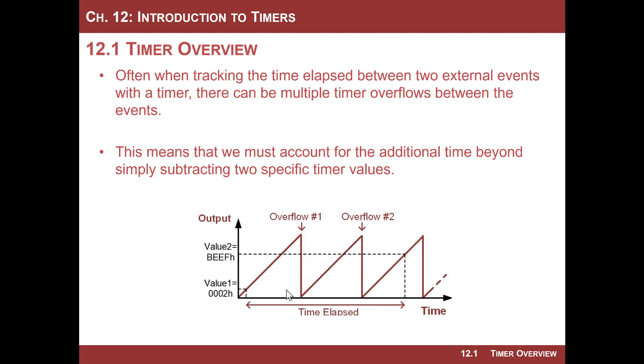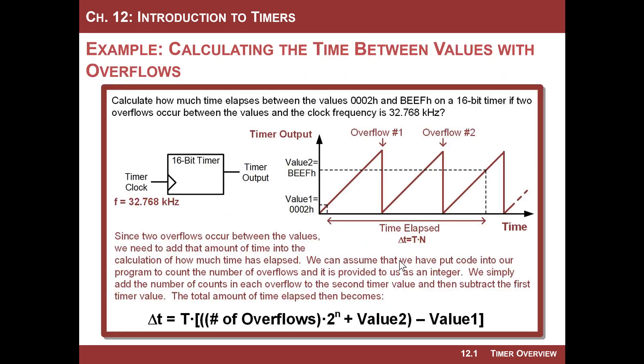Well, that's okay. As long as we know how many overflows occurred and we know the starting value and the ending value, we can absolutely calculate that. So let's think about how we would do it. I would say I'm going to start here and end at this value. I'm starting at 0002h and I'm ending at BEEFh. And I'm going to have two overflows that occur. And guess what? The timer system might notify me every time an overflow happens and I just make a note of it.